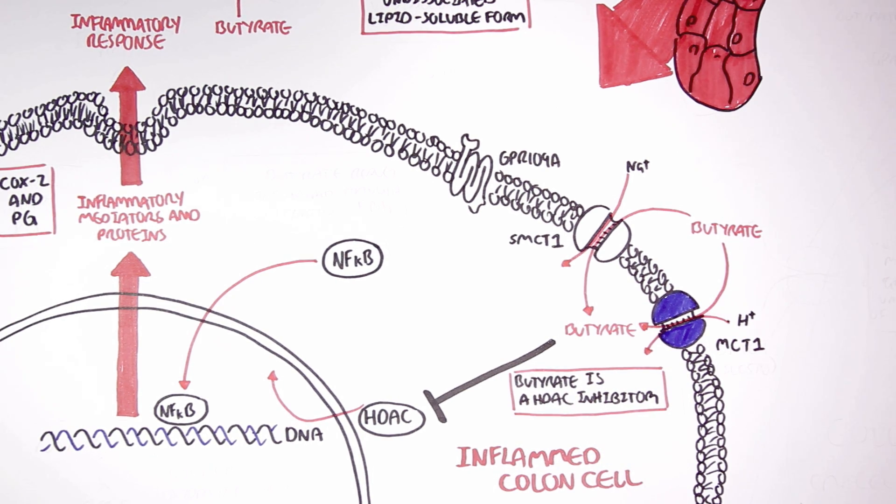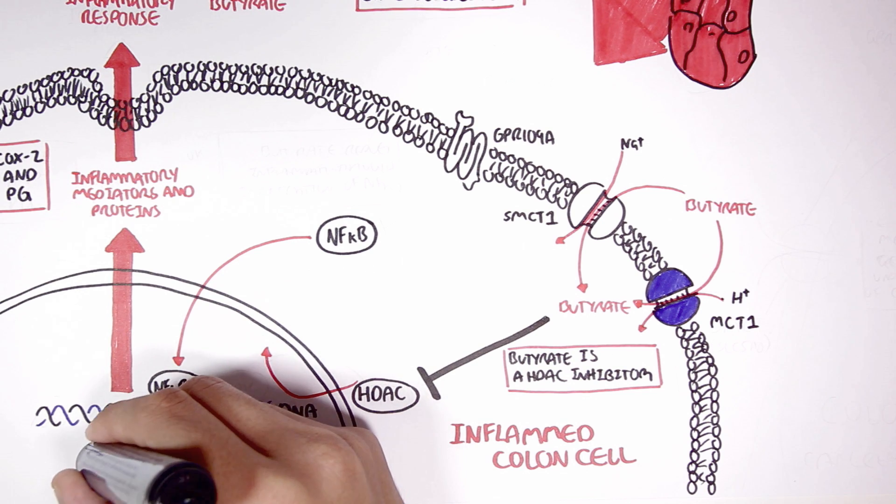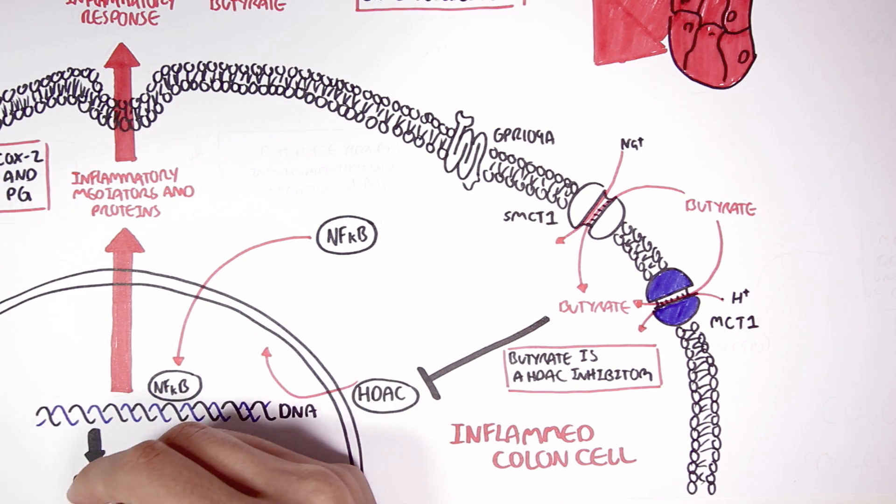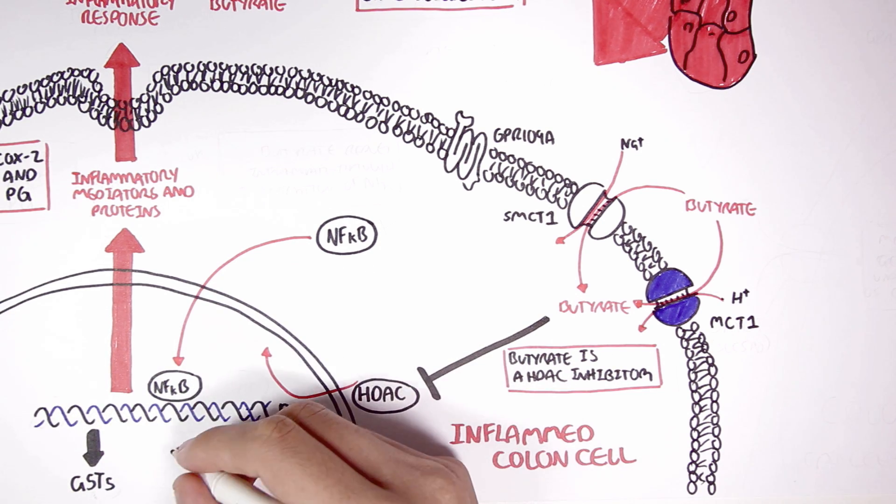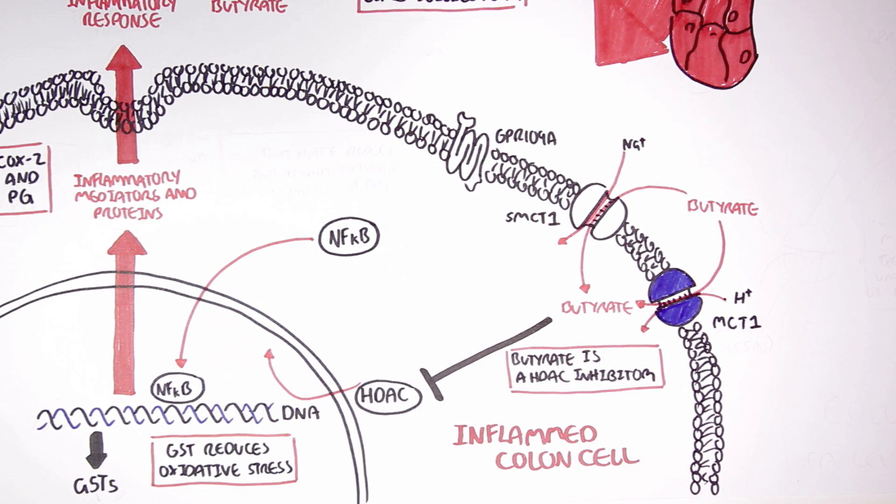By inhibiting HDAC, there can be activation of certain genes, such as for glutathione S-transferases, or GSTs. GSTs will reduce oxidative stress associated with inflammation.